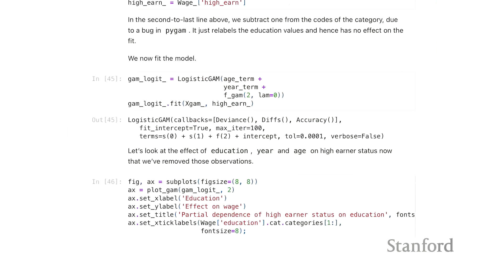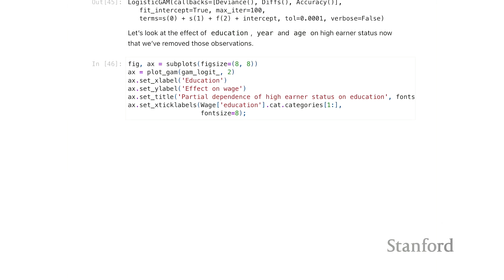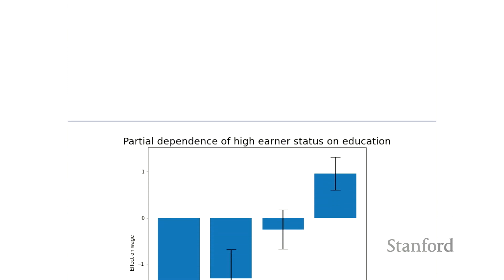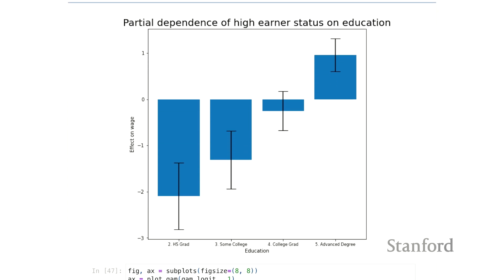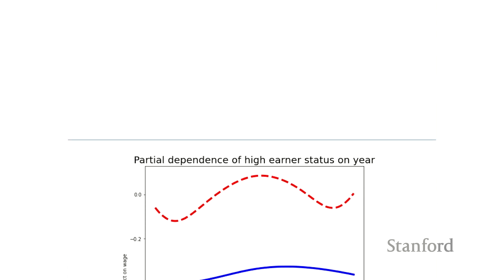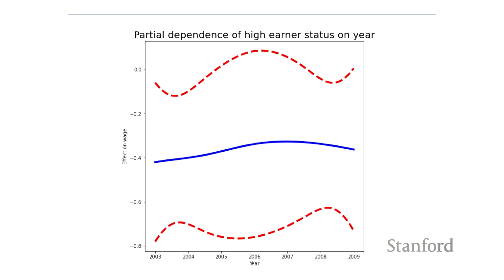So we're going to refit the model, excluding the observations that don't have more than a high school diploma earners. And now we see, well, we have reasonable estimates of the effects of being a high earner for the different levels of education.